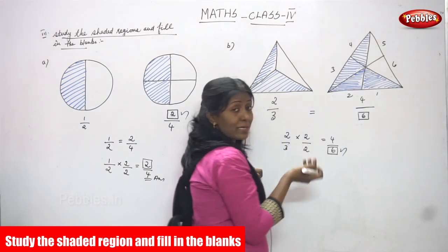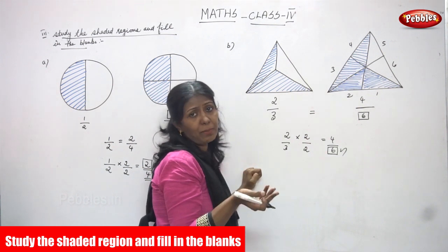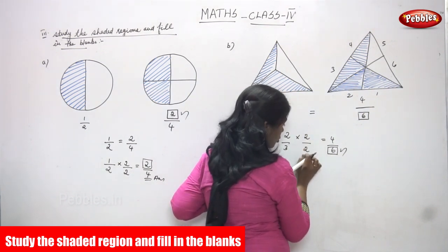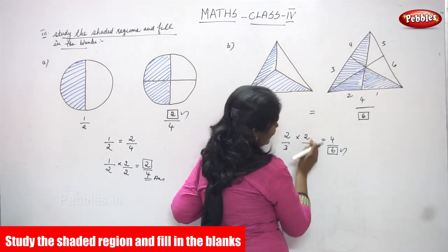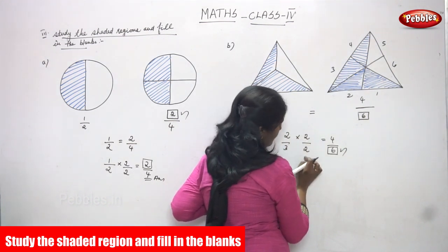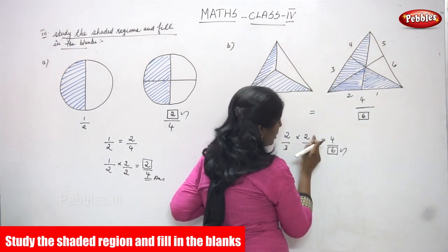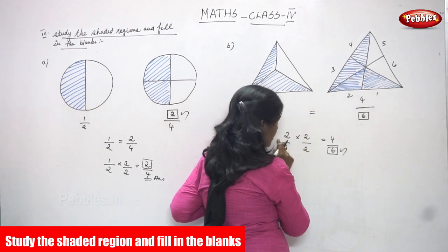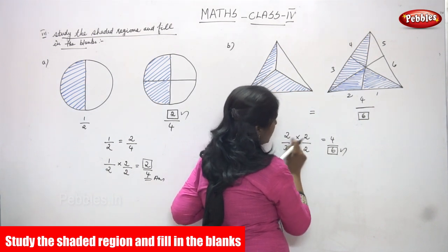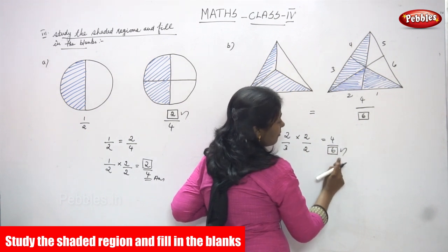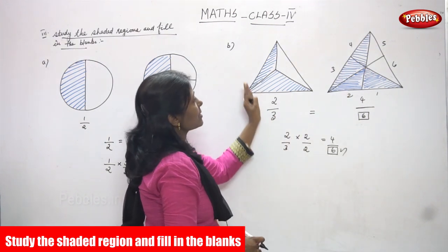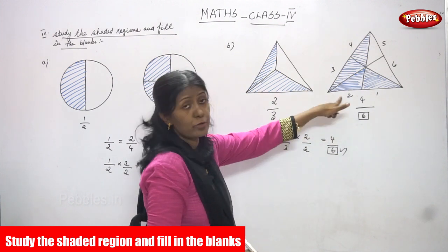The rule is: if the numerator is multiplied by two, the denominator is also multiplied by two — and vice versa. Two by three multiplied by two: two into two gives four, and three into two gives six. So you write six in the box. Two is called a multiple — I'm using the multiplication table of two. So six is the correct answer.